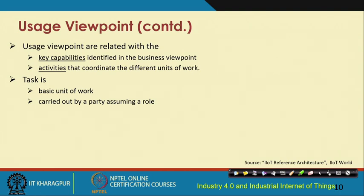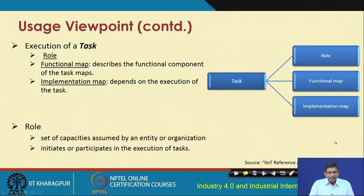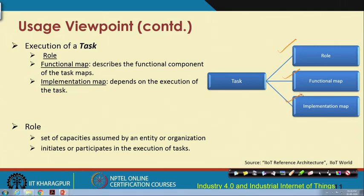Usage viewpoints are related to the key capabilities identified in the business viewpoint and the activities that coordinate the different units of work. In the context of the usage viewpoint, a task is a basic unit of work carried out by a party that assumes a specific role. These tasks are executed by certain roles, and each task has a functional map and an implementation map. The functional map talks about the functional component of the task, while the implementation map talks about the execution of those tasks.